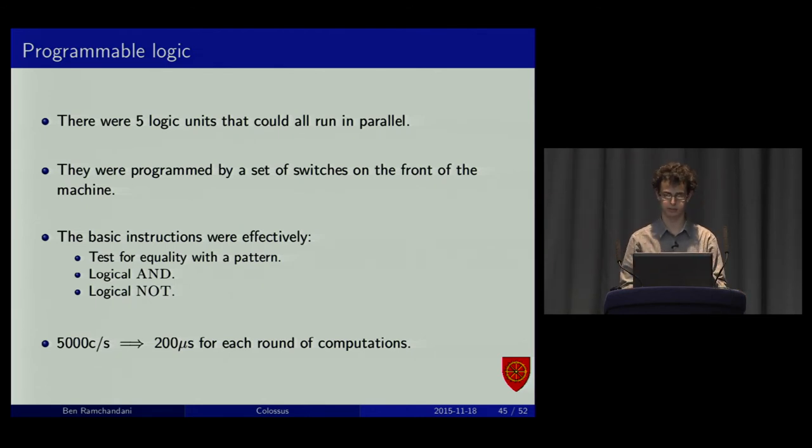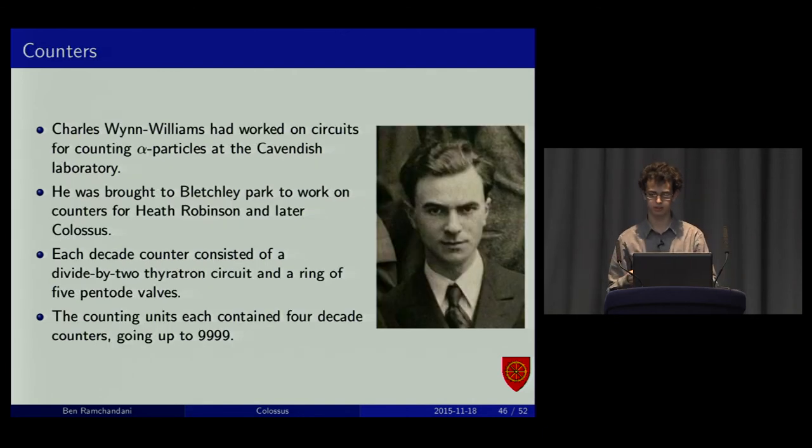And it ran pretty fast at the time. It was 200 microseconds per clock cycle. The counters, this was actually based on a pre-war design. Charles Wynne Williams. He worked on circuits at the Cavendish, in Cambridge, under the supervision of Ernest Rutherford, his PhD, looking at counting alpha particles. He designed electronic counters for that. The ones on Colossus were actually faster than designs for the alpha particles. He was brought to Bletchley Park by Max Newman, who'd heard of his work.